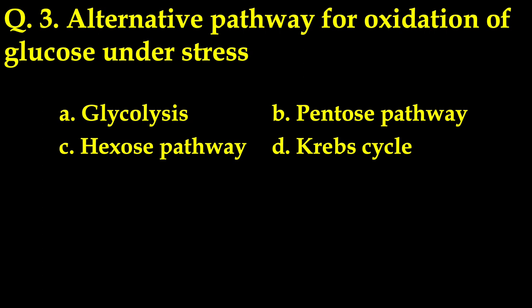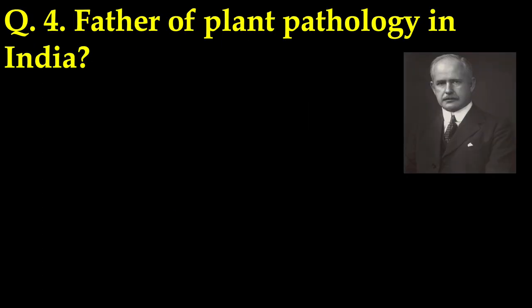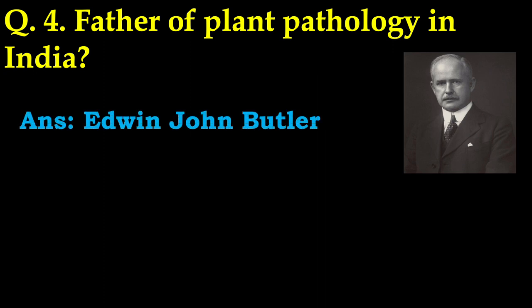Another question: alternative pathway for oxidation of glucose under stress — there were four options: glycolysis, pentose pathway, hexose pathway, and Krebs cycle. The correct answer is pentose pathway. Another question: the father of plant pathology in India — he is none other than Edwin John Butler.